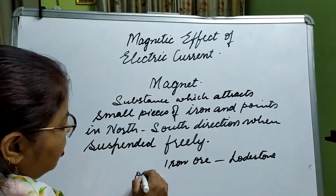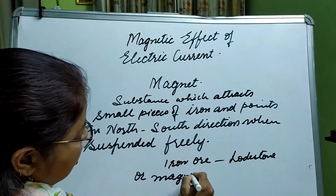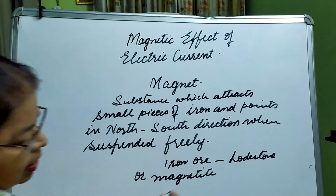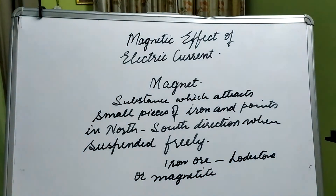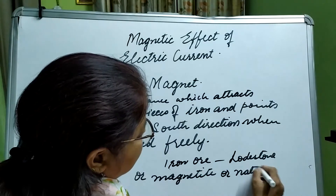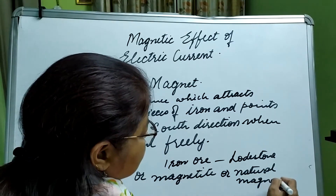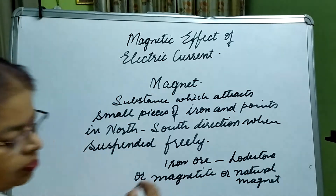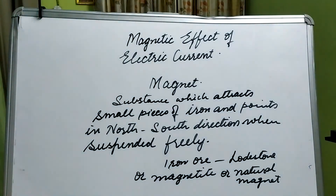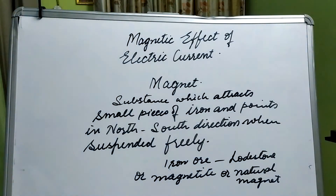We can also call it magnetite — M-A-G-N-E-T-I-T-E. So lodestone, magnetite, and natural magnet are all names for the same thing. This iron ore — lodestone or magnetite — has the property of attracting iron pieces.